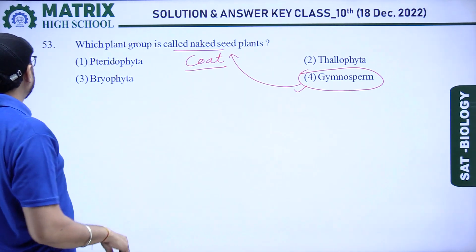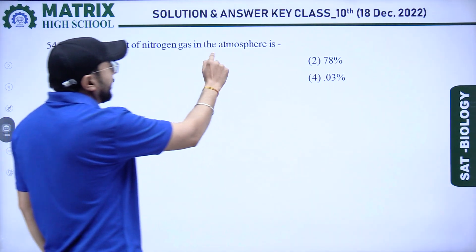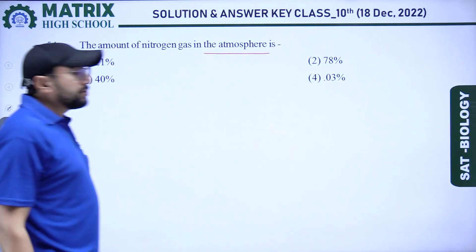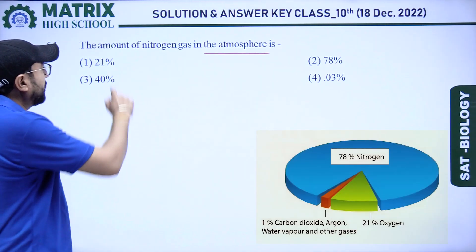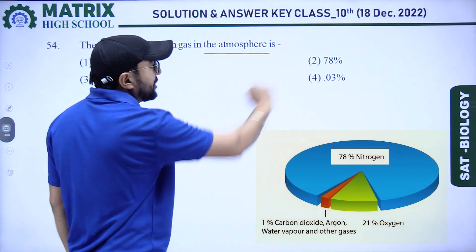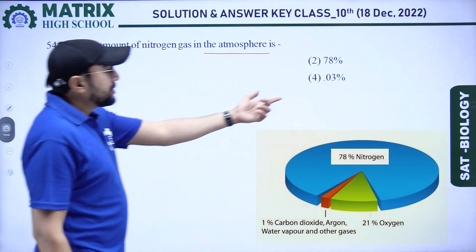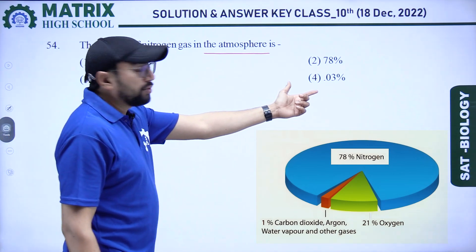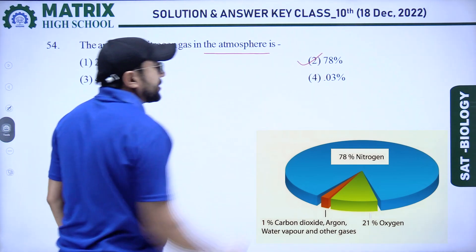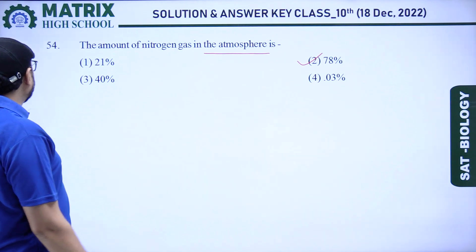Next question: the amount of nitrogen gas in the atmosphere is? Options: 21%, 78%, 40%, and 0.03%. Our right answer is 78%.